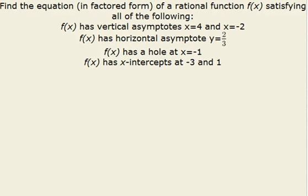Find the equation in factored form of a rational function f(x) satisfying all of the following: f(x) has vertical asymptotes x=4 and x=-2, horizontal asymptote y=2/3, a hole at x=-1, and x-intercepts at -3 and 1.